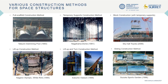This sheet shows six examples of construction methods of steel structures: full scaffold construction method, temporary support construction method, block construction, lift-up construction method, lift-up turn construction method. The last photo shows the sliding construction method, which is to be focused on today.